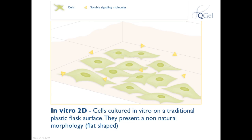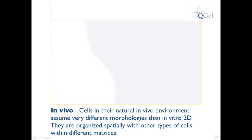Cells in their natural in vivo environment assume very different morphologies than in 2D culture and are much more complex. Let's take a look at cells in their natural in vivo environment.